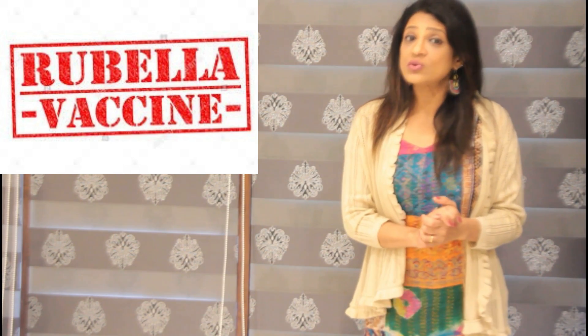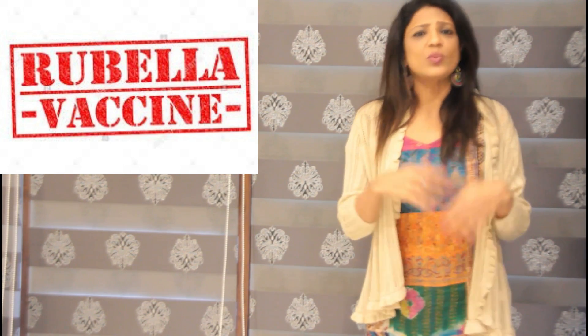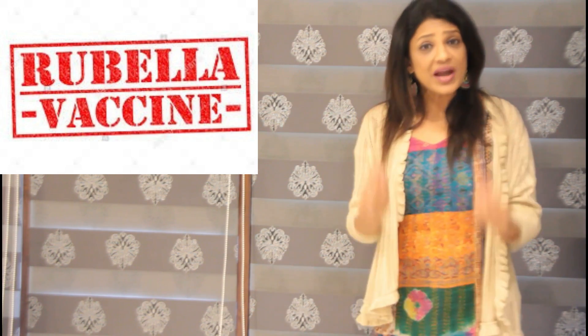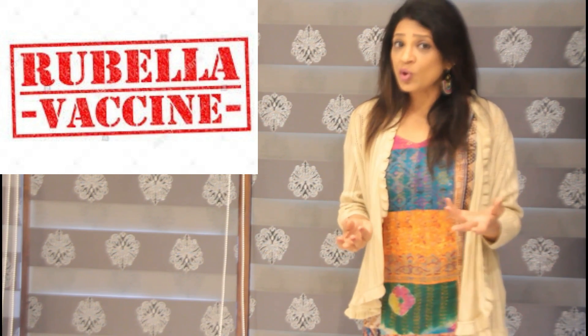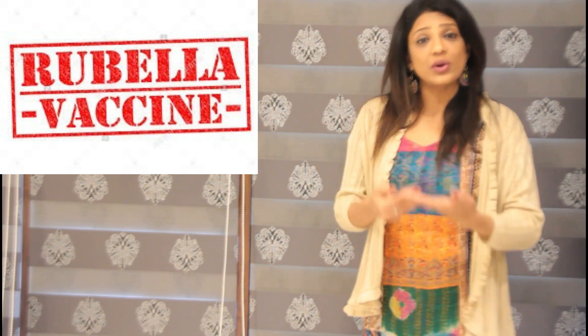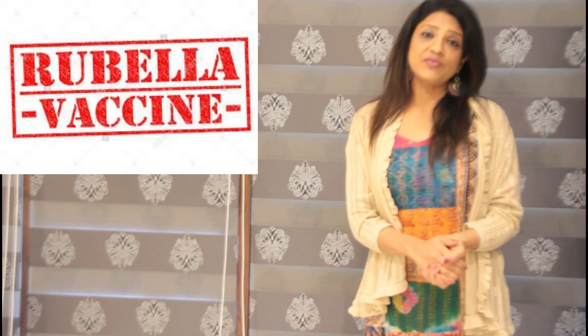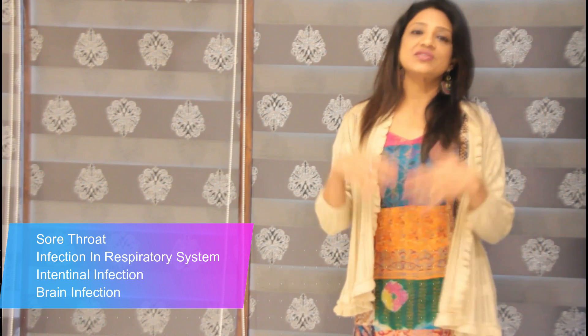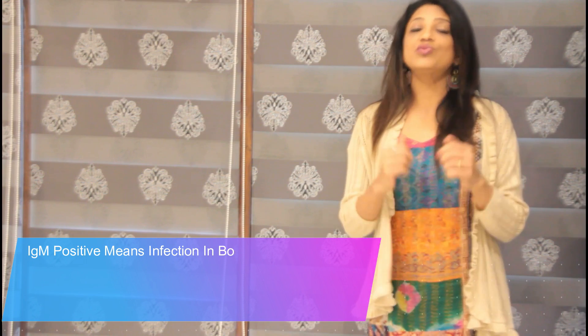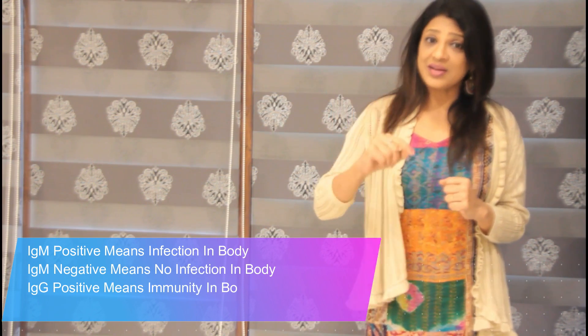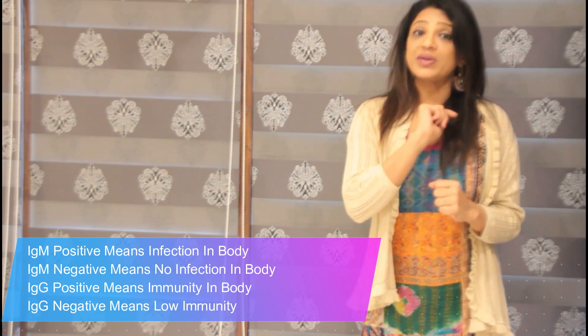If IgG is low, there are certain conditions in which immunity goes low. If your body is not producing enough immunoglobulins, or IgM is not converting into IgG, then you are prone to infections like sore throat, respiratory infections, intestinal infections, brain infections, or meningitis. So basically, IgG positive means you are strong, healthy, and immune to fight infections. IgM positive means a current infection is ongoing and you need treatment.